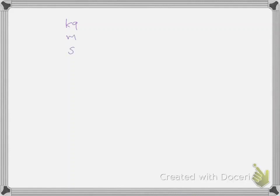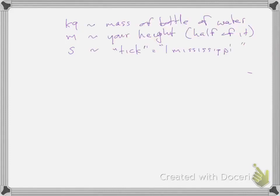In order to do order of magnitude estimations, we need to go back to our base units. Kilogram, meters, second. How big is a kilogram? How big is a meter? How big is a second? You want to have a good sense of that in order to have a sense of other things. A kilogram is approximately the mass of a bottle of water, for example. Your textbook weighs a couple of kilograms. A meter is approximately your height. It's really about half your height, maybe a little more.